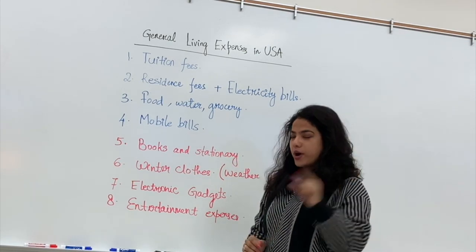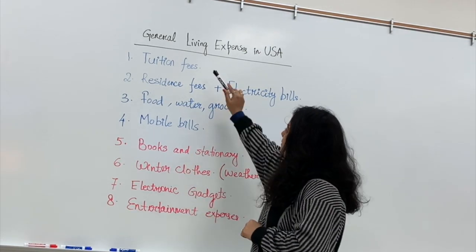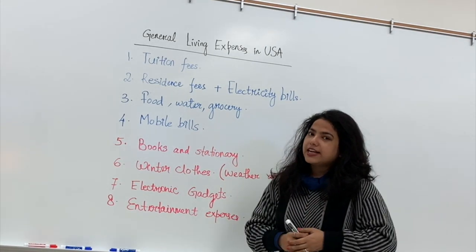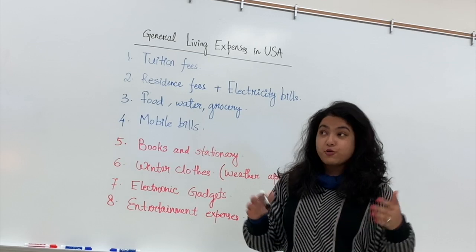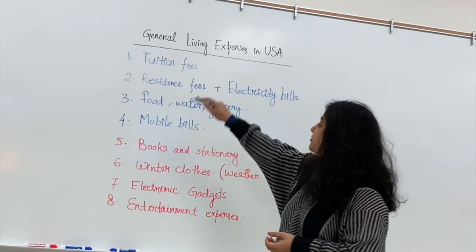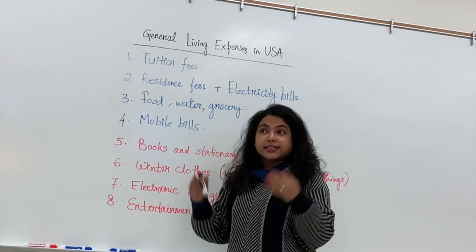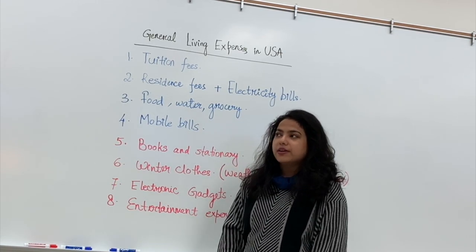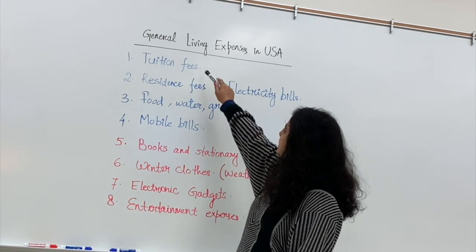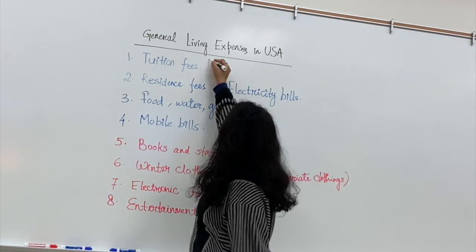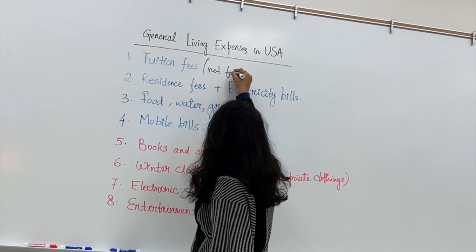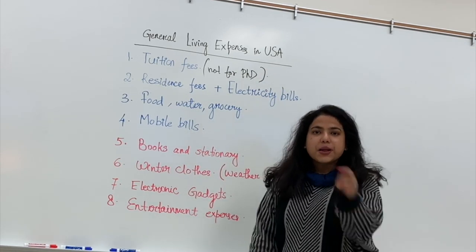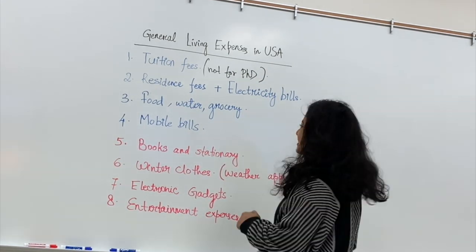The first and most important priority is tuition fees. If you are going for a PhD in the United States, you are not going to pay your tuition fees yourself — it is waived as part of your stipend package. And if you're on a graduate assistantship, you get a stipend too. So this point is essentially not applicable to PhD students, as the university and department take care of it.